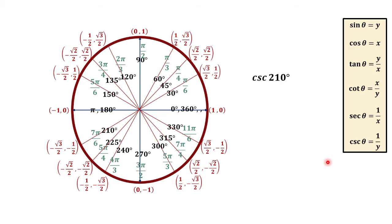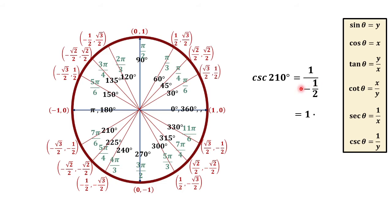For cosecant 210 degrees, cosecant is equal to 1 over y. For 210 degrees, the y-coordinate is negative one-half. So we have 1 over negative one-half. Multiplying by the reciprocal of negative one-half gives negative 2 over 1. Simplifying, cosecant 210 degrees is equal to negative 2.